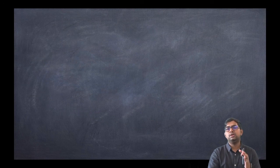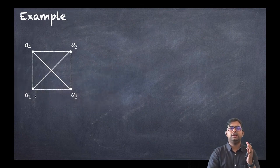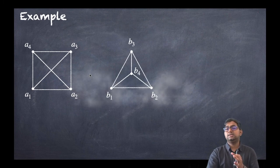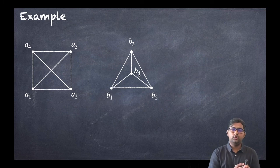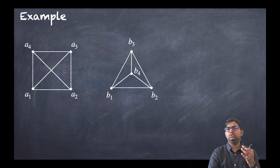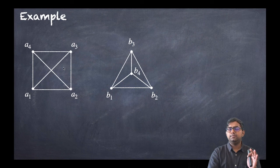Let us discuss some basic examples. Here we have one graph with vertices a1, a2, a3, a4 — four vertices and six edges total. The second graph has vertices b1, b2, b3, b4. Now just by looking at these graphs, some students might say they are not isomorphic because their shapes are different, but actually it is an isomorphic graph.